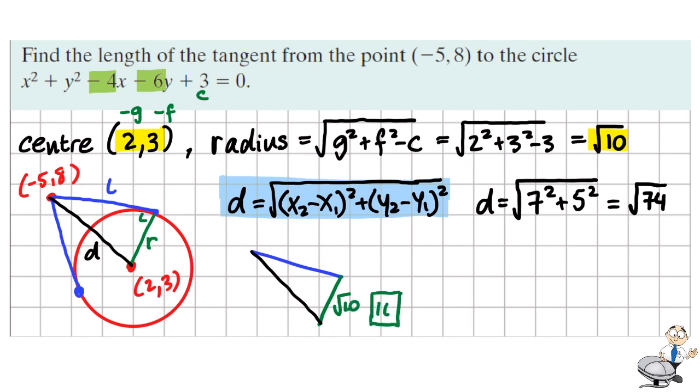We know that R is the square root of 10. So the square on this would be 10. D is 74. The square on this would be 74. And L is one of the smaller sides. So we take 10 from 74, because 74 is the hypotenuse, giving 64.